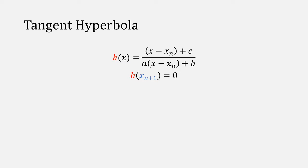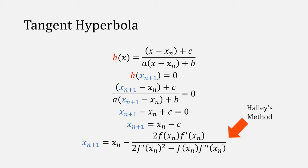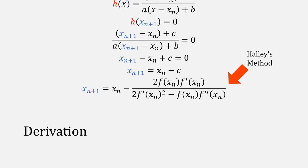With our hyperbola, all we really care about for our next value for x is where our hyperbola is 0. So if we plug in x sub n plus 1, all we really need is for that numerator to be equal to 0. Therefore, if we move our xₙ and c terms over and substitute what we know for c, this gives us Halley's method, although it's not the traditional derivation.